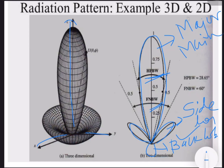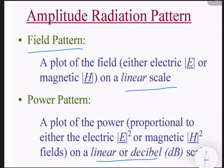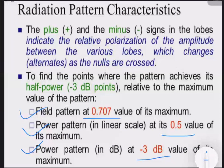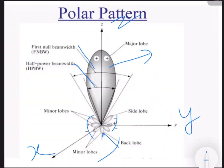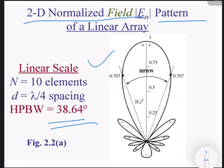The radiation pattern can be obtained in two-dimensional or three-dimensional view, and as field pattern or power pattern. When the radiation parameter is expressed as a field pattern, its maximum value is 0.707. When expressed as power pattern in linear scale, the maximum value is 0.5. When represented as power pattern in dB, the value is minus 3 dB — at the minus 3 dB point the maximum power occurs. The representations include polar pattern, linear pattern, and normalized field pattern.